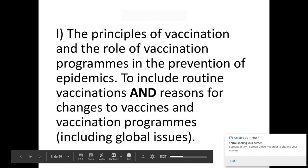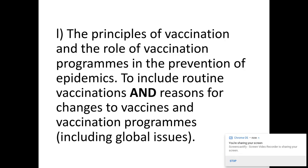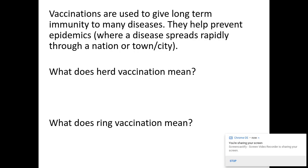Welcome biologists, today we're looking at communicable diseases 4.1.1, taken from the OCR specification for A-level biology. We're looking at specification point L: the principles of vaccination and the role of vaccination programs to prevent epidemics. Vaccinations are used to give long-term immunity to many diseases and help prevent epidemics, which is where disease can spread rapidly throughout a nation or a town.